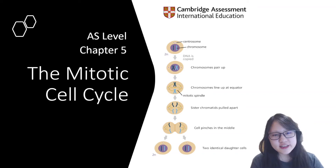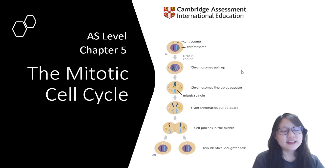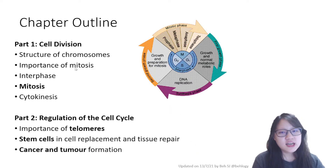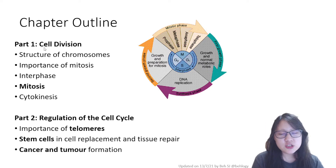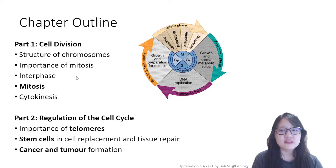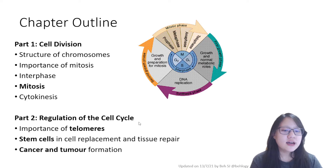Hello everyone and welcome to chapter 5 — the mitotic cell cycle. In this chapter, there are two major parts. Part 1 is cell division, which goes through the entire process of mitosis and the cell cycle. And part 2 is about regulation of the cell cycle and what happens when it goes wrong.